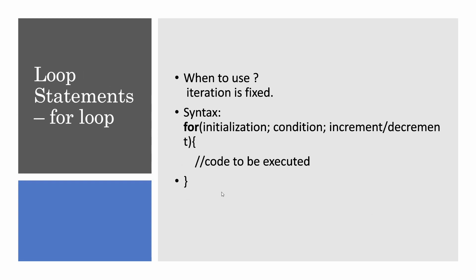Coming to loop statements — there are four different types. The first is the for loop, which you use when your iteration count is fixed. In it, you initialize a variable, put a condition, and increment or decrement. We will see how this works in the live demo, where the code inside will be executed.